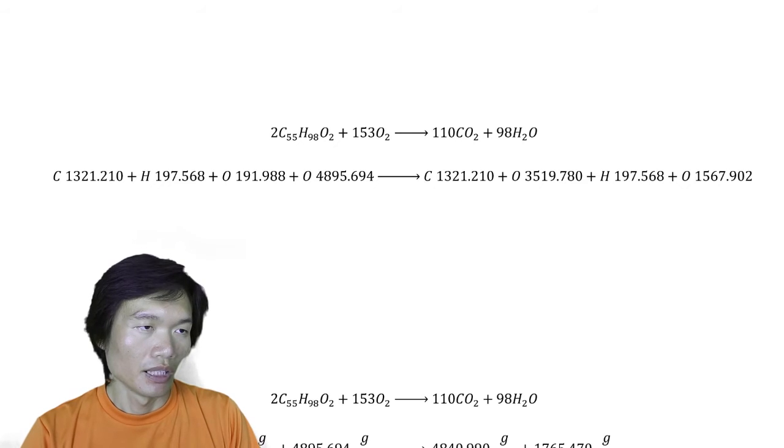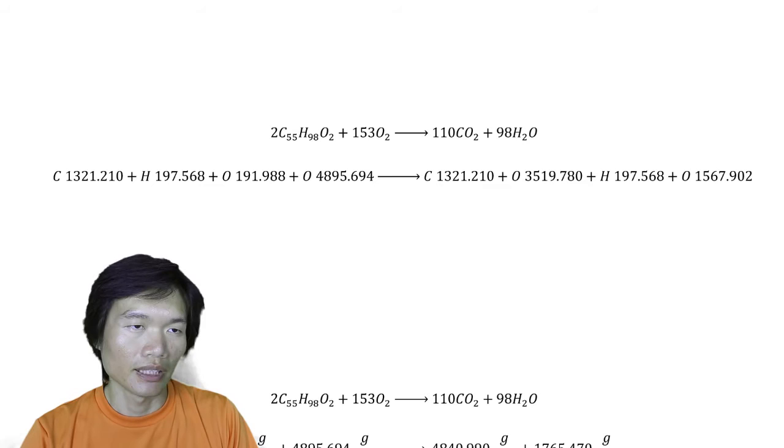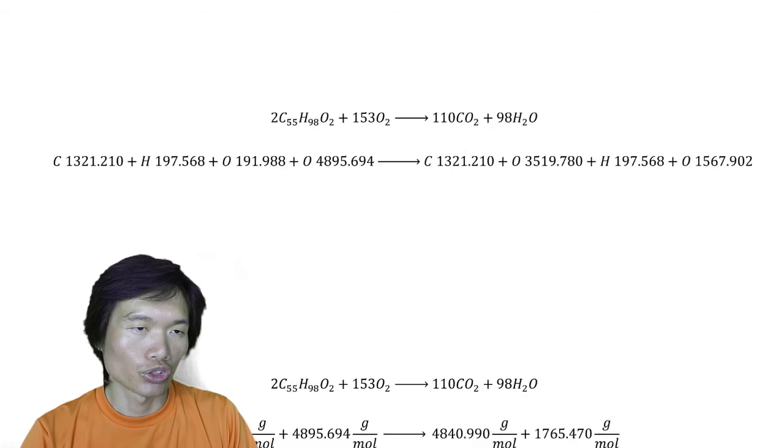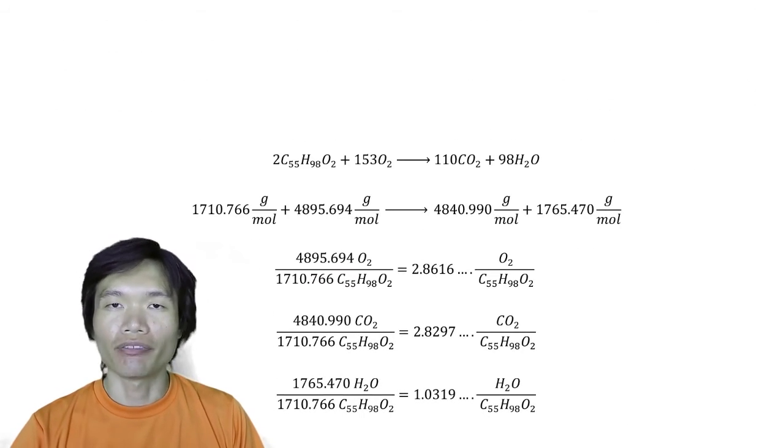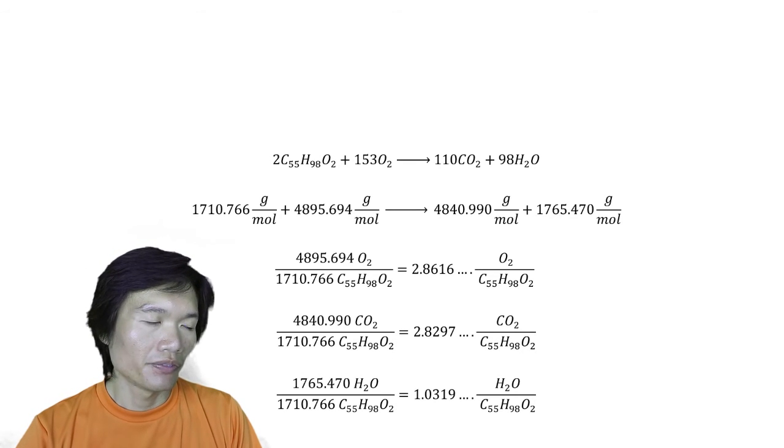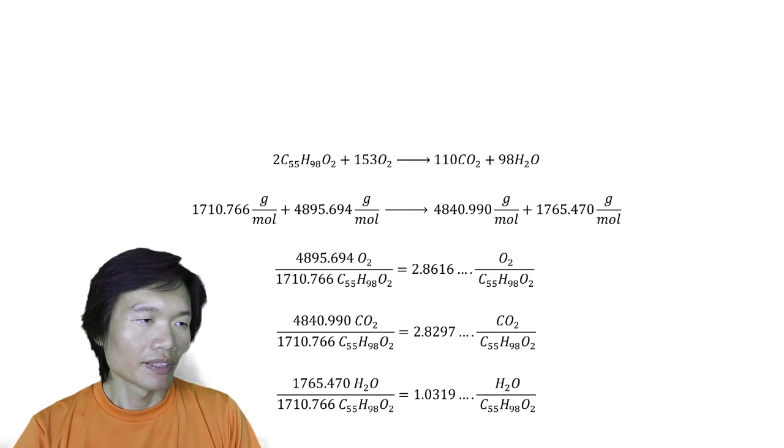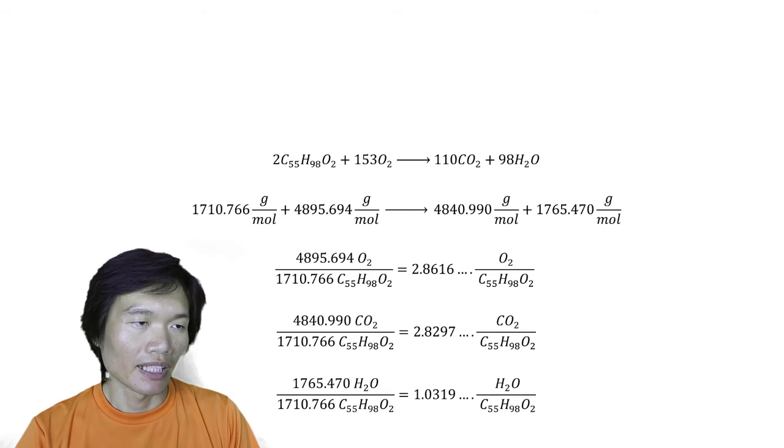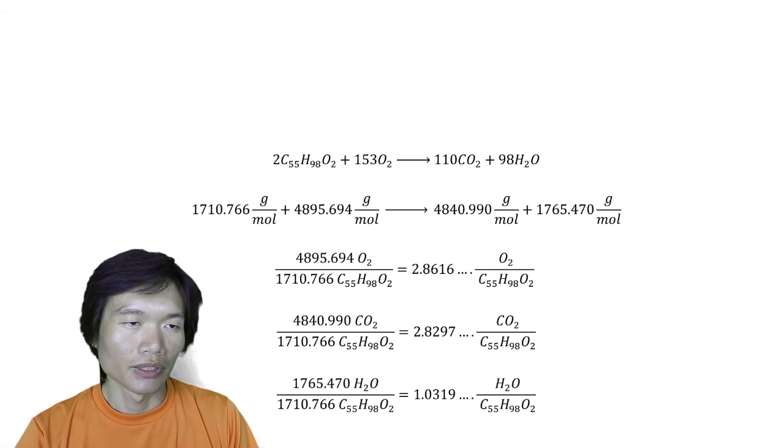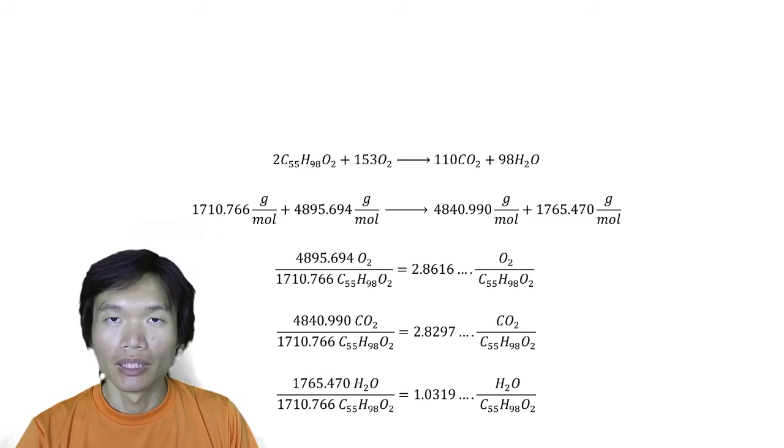Feel free to pause if you need to calculate. We have this much of carbon, this much of oxygen, and then here is the same. Let's add it up together. The final numbers: we have 1710.766 grams per mole of triglyceride, 4895.694 grams of oxygen, 4840.990 grams of CO2, and 1765.470 grams of H2O water.